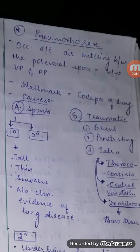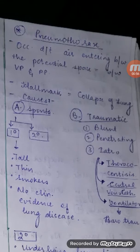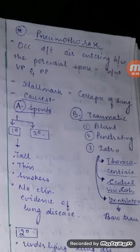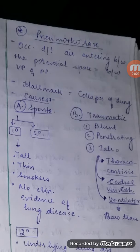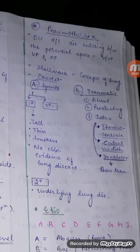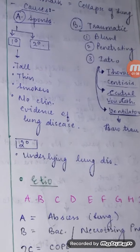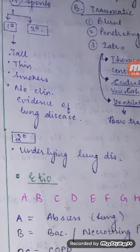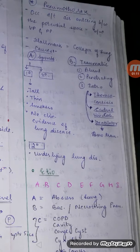What are the causes? Number one it could be spontaneous, number two traumatic. Spontaneous can be primary or secondary. Primary occurs in a tall thin person with a history of smoking and there is no clinical evidence of any lung disease, whereas spontaneous secondary involves an underlying lung disease.